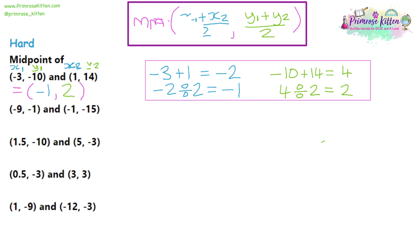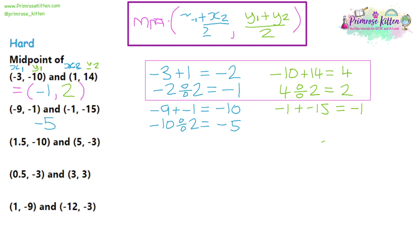For question 2, we add together the x-coordinates: -9 plus -1 gives -10. Dividing by 2 gives -5. So the x-coordinate is -5. Then for the y-coordinates: -1 plus -15 gives -16. Dividing by 2 gives -8. So the y-coordinate is -8. Writing that out as a full coordinate, the final answer is (-5, -8).